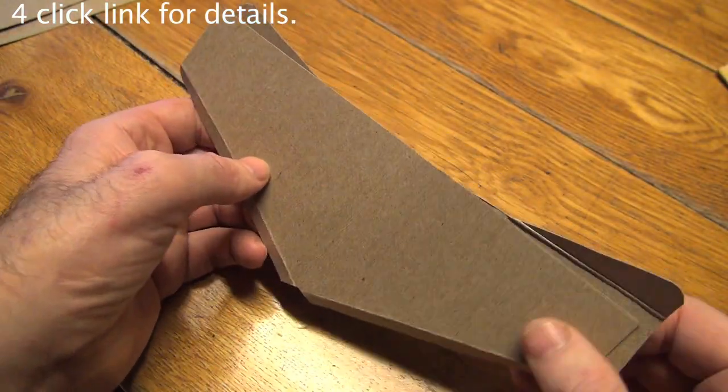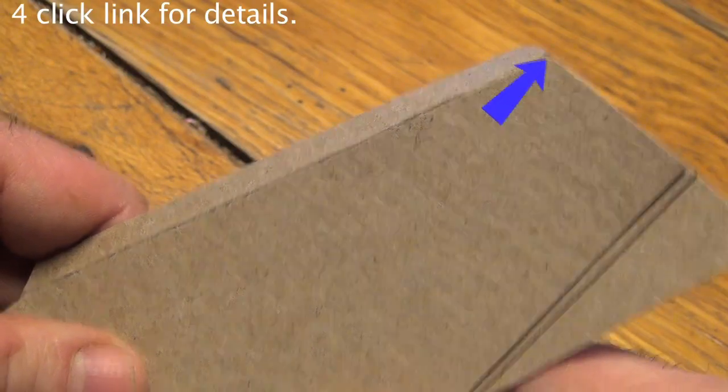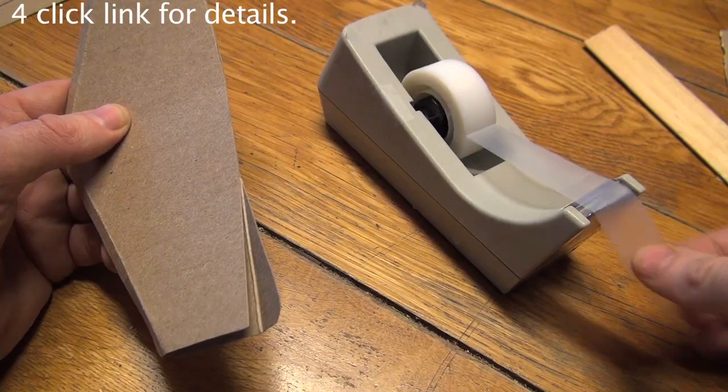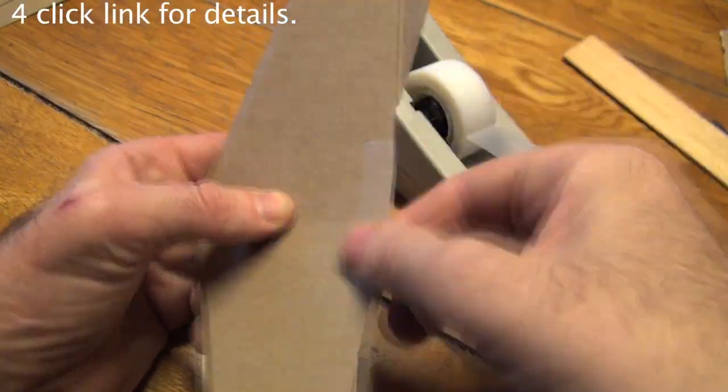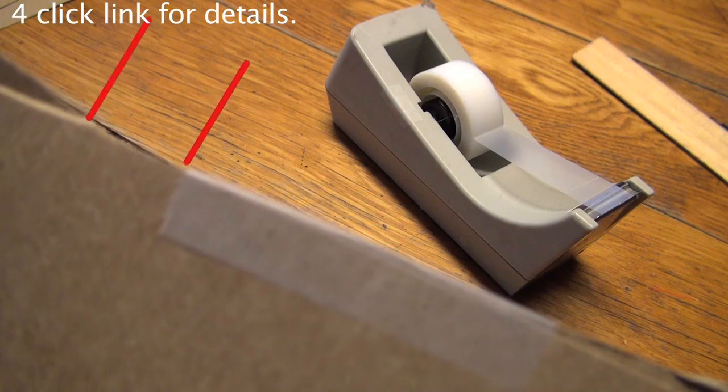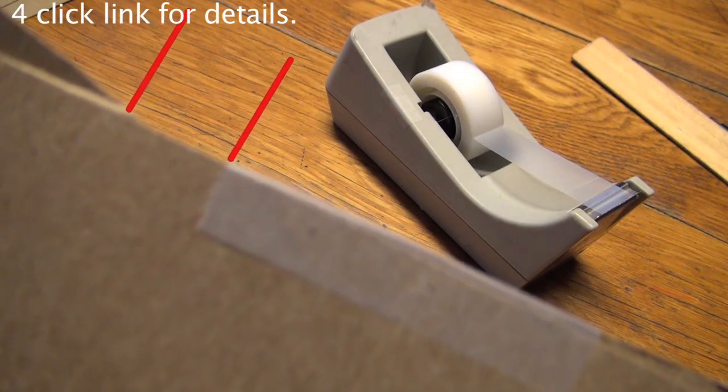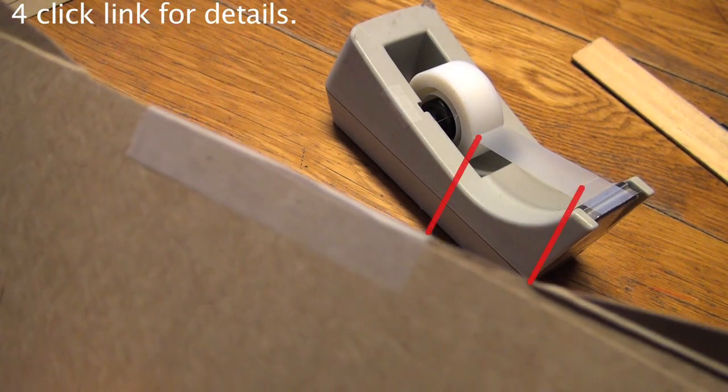This piece goes on top. These edges at the ends and here should line up. Make a tape hinge. But don't make the tape all the way to the tabs, because that could interfere with the foam going in.